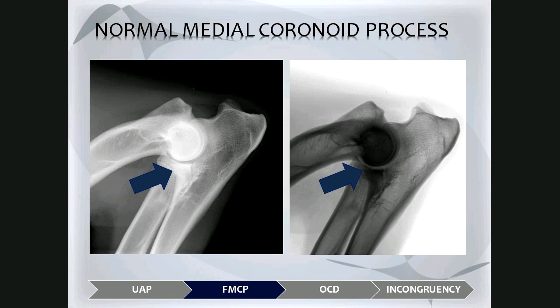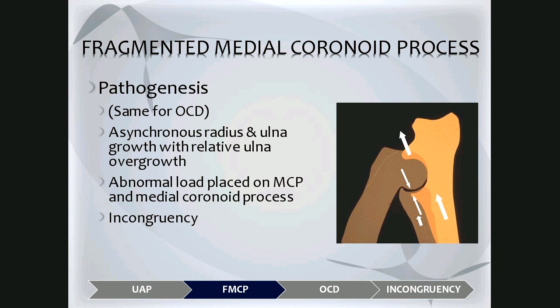Fragmented medial coronoid process has the same pathogenesis as OCD or osteochondrosis. There is asynchronous radius and ulnar growth with relative ulnar overgrowth, which is microscopic. As the ulna keeps growing, the medial coronoid process pushes against the humeral condyle, and because of this abnormal load, it can fissure and fragment, although incongruency can also be seen at the same time.